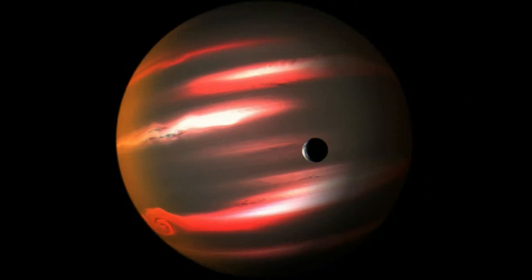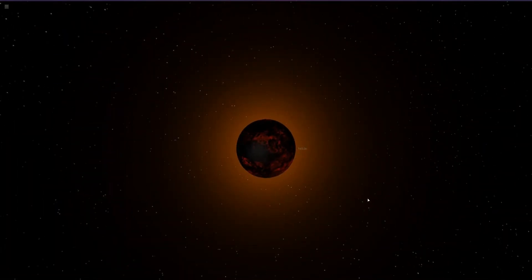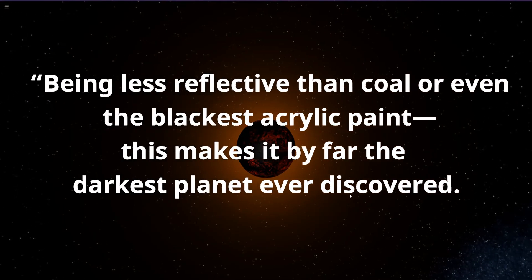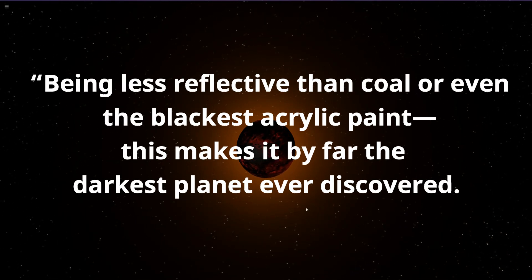TrES-2b orbits at a distance of just 3 million miles from its host star. It is coal black, reflecting less than 1% of any light that hits it. Astrologists said this planet is less reflective than coal or even the blackest acrylic paint, making it by far the darkest planet ever discovered.